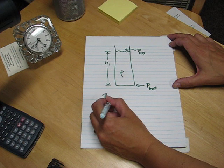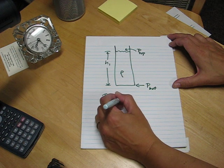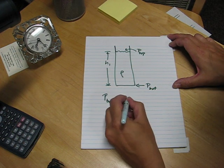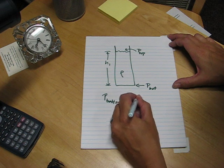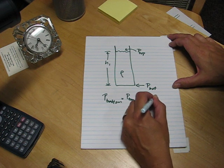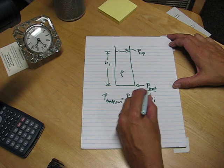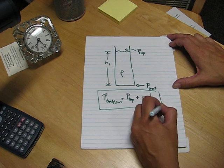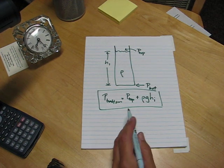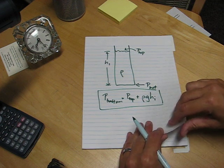So the pressure at the bottom equals the pressure at the top plus ρgH, height of the column of fluid. That fact is the only additional fact we need to finish that manometer problem.